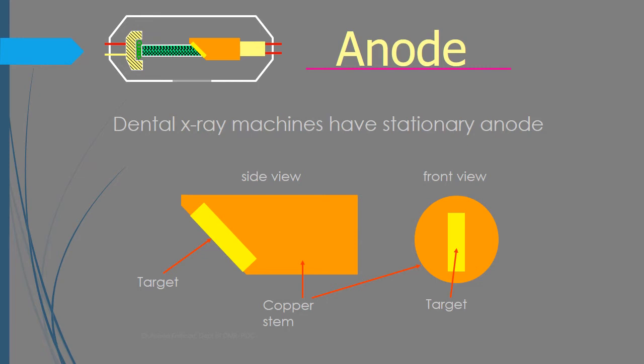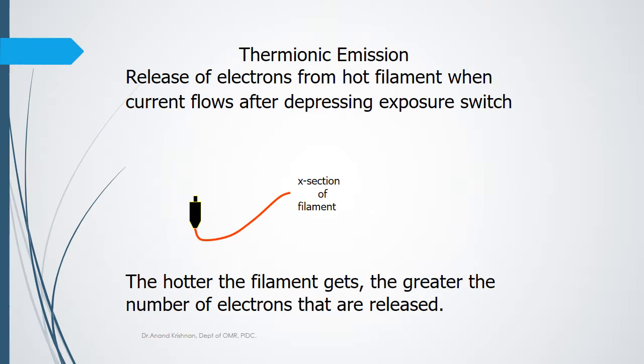The problem with the stationary anode is excessive heat generation. Even with the copper stem dissipating heat, wear and tear of the tungsten leads to pitting, affecting the quality of x-rays produced. The stationary anode is used in intraoral machines because the power levels are low enough to avoid significant damage. For higher-powered machines, a rotating anode is used.